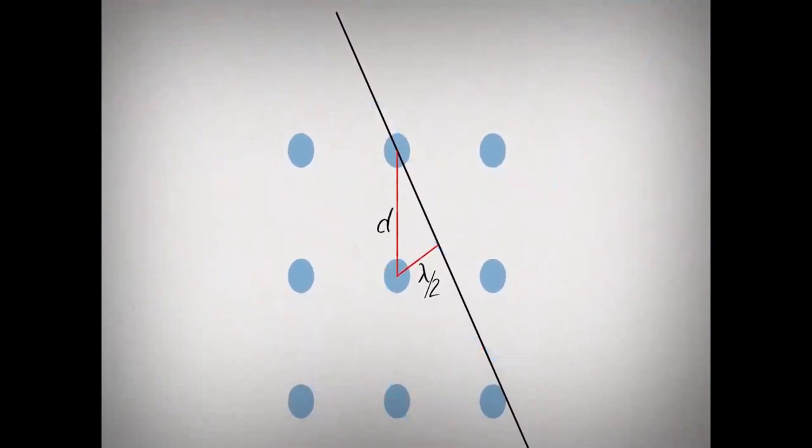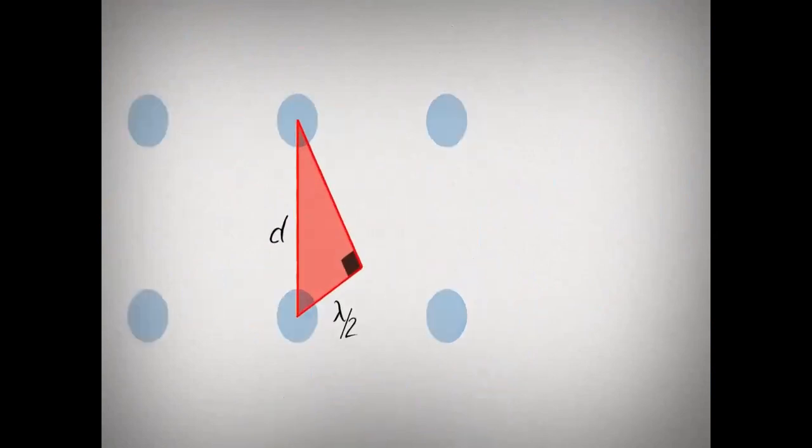The exact angle at which diffraction occurs can be determined from the red triangle. The angle at the top is theta, half the angle between the incident and scattered beams. The long side is the distance between the atomic planes, and the short side we know is one half of a wavelength. The relationship between the diffraction angle and the spacing between the atoms can be determined by applying the sine function.